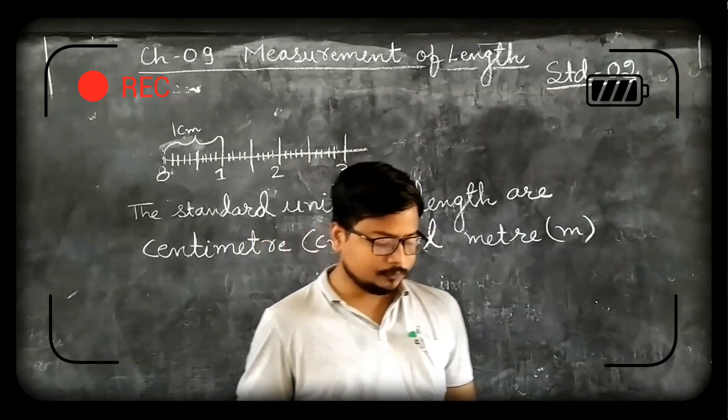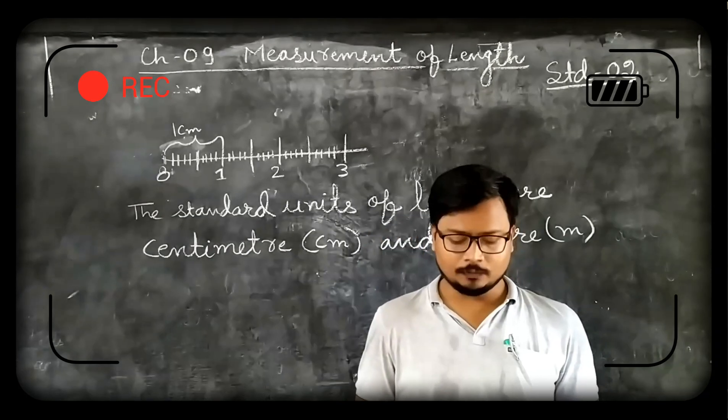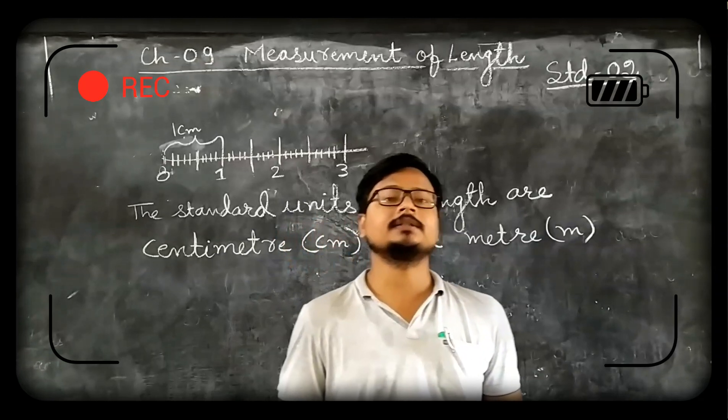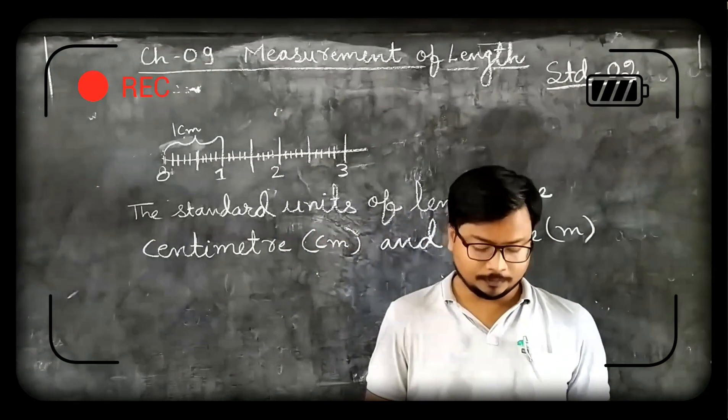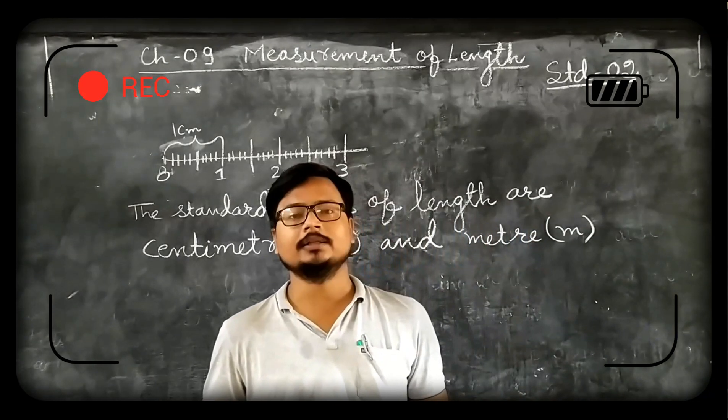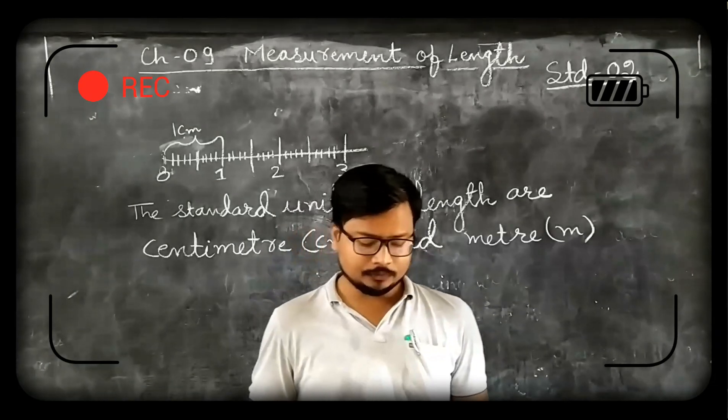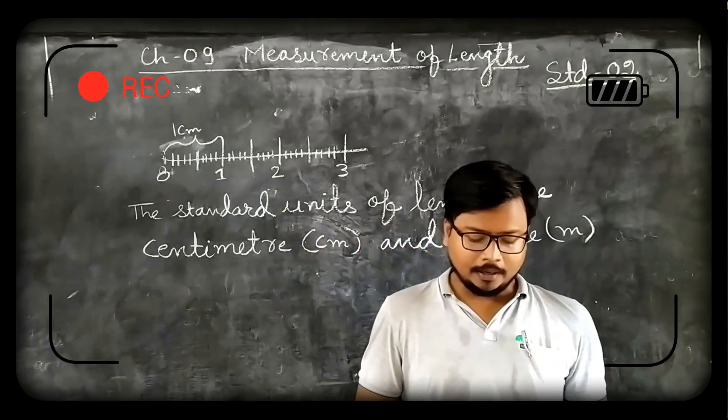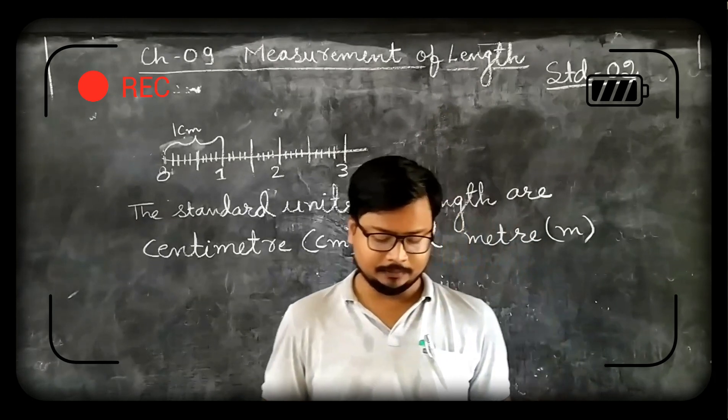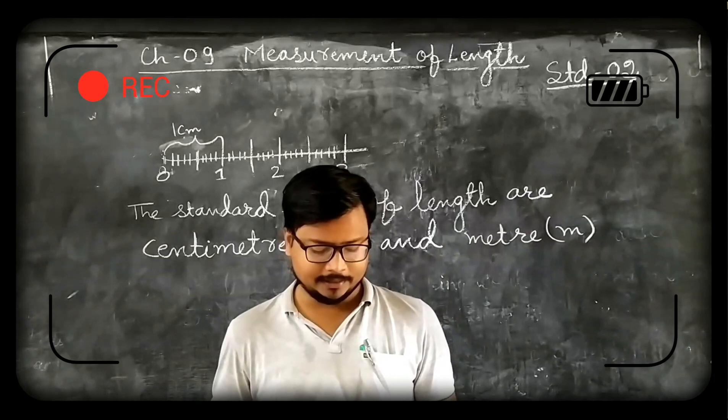Now see, Rahul and his father were discussing about measurement of length. Rahul wants to know his height, so his father helped him. He made Rahul stand against the wall and mark a line. Then Rahul measured his height with his hand span.